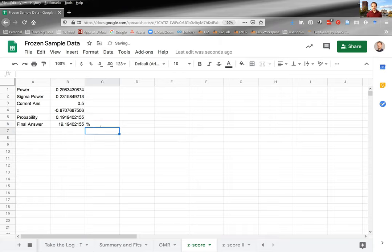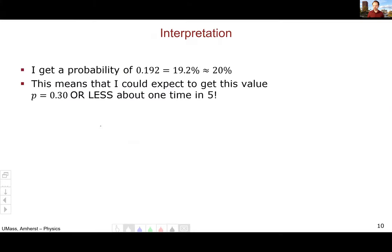And then maybe we multiply it by 100 to make it a nice percent. So 19.2%. To interpret 19.2%, that's like 20%, which means that I should expect to get a power of 0.30 or less 20% of the time. That's one time in five. That's pretty common. So that's not that weird of a situation.